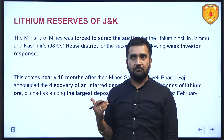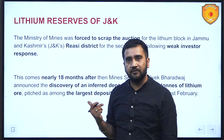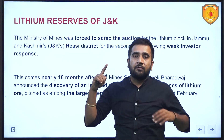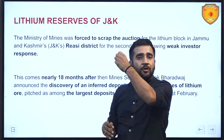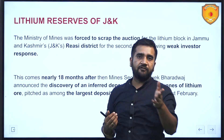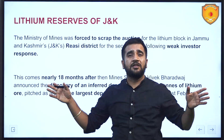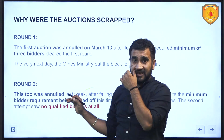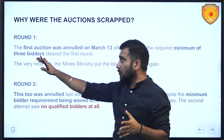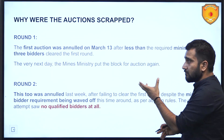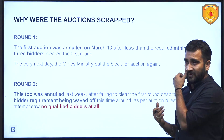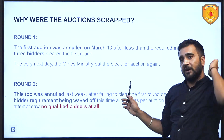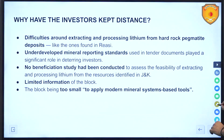Moving to lithium reserves in Jammu and Kashmir: one and a half years ago, reserves were discovered in the Riyasi district of J&K, believed to be the world's largest. The government put them up for auction. In round one, the minimum requirement was three bidders, but that minimum was not met, so round one failed. In round two, the government removed the three-bidder minimum requirement, but not even a single bidder came. So why have investors kept their distance?